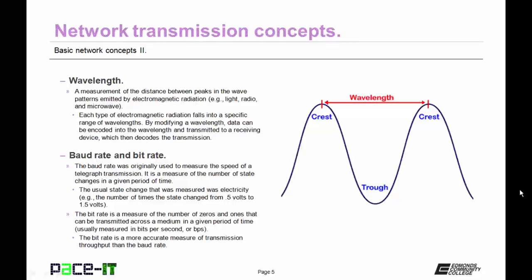Then there's baud rate and bit rate. The baud rate was originally used to measure the speed of a telegraph transmission. It is a measure of the number of state changes in a given period of time. The usual state change measured was electricity, as in the number of times the state changed from 0.5 volts to 1.5 volts. The bit rate is a measure of the number of zeros and ones that can be transmitted across the medium in a given period of time, usually measured in bits per second or BPS. The bit rate is a more accurate measure of transmission throughput than the baud rate.